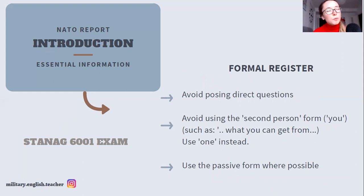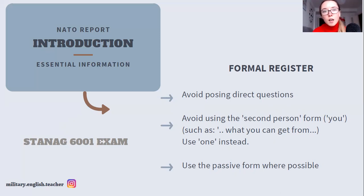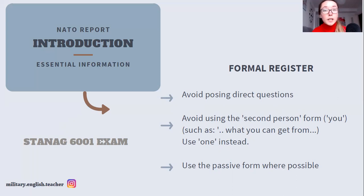Formal register. You probably know you're supposed to write your report using formal language, but what does it mean exactly? Apart from not using short forms, you're also not supposed to ask direct questions or use the second person form 'you', such as 'what you can get from it.' Speakers of many languages tend to overuse this 'you' form, but it's a very direct way of talking to someone, making it not appropriate for a report, which is meant to be impersonal. Use 'one' instead — 'what one can get from it.' And of course, use passive form as much as possible. This is like the number one grammar requirement as far as the report is concerned.